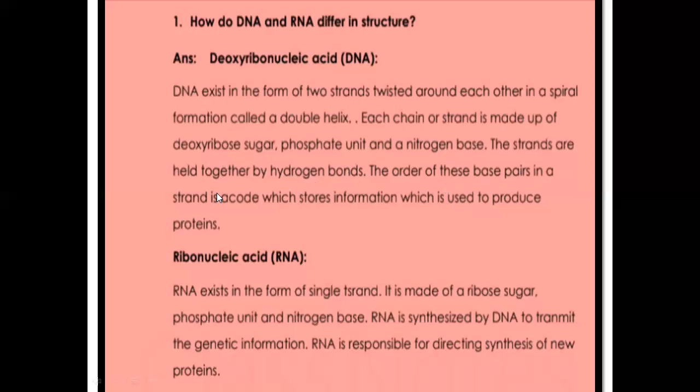The order of these base pairs in a strand is a code which stores information used to produce proteins. The base pairs are in a specific order — there is a specific pairing of the bases, and that pairing is very important because it actually stores information. That information is then used by RNA to produce proteins. This is called genetic code, and it is important for specific proteins.